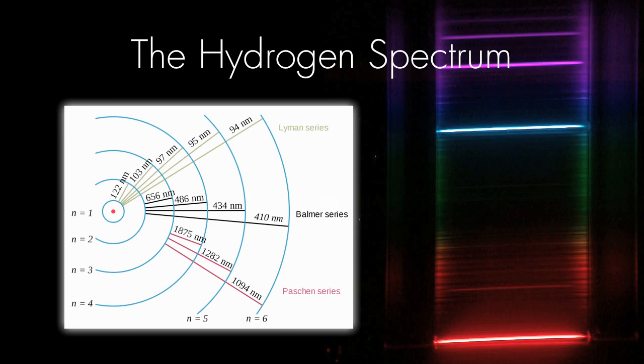These are what produce the lines in the visible spectrum. You can see there's one red line, one blue line, and two in the purple or violet range.